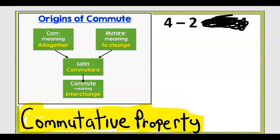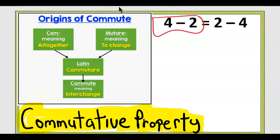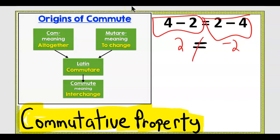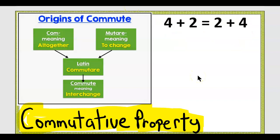The question is: are these equal? If we do four minus two, which is two, is that the same thing as two minus four? No, that's negative two. So we cannot use the commutative property here — it does not work for subtraction. What about addition? Four plus two is six. Is two plus four six? It is. Commutative property does work — it applies for addition.